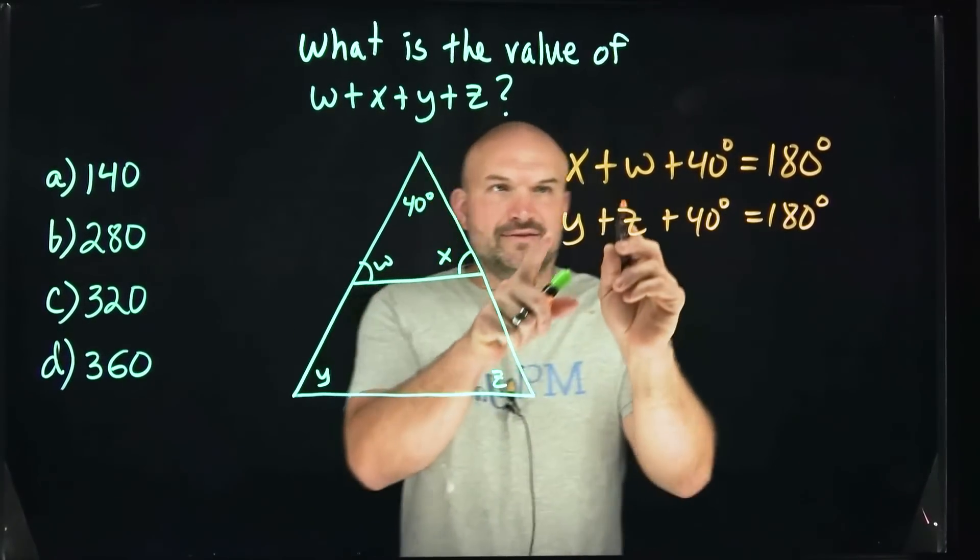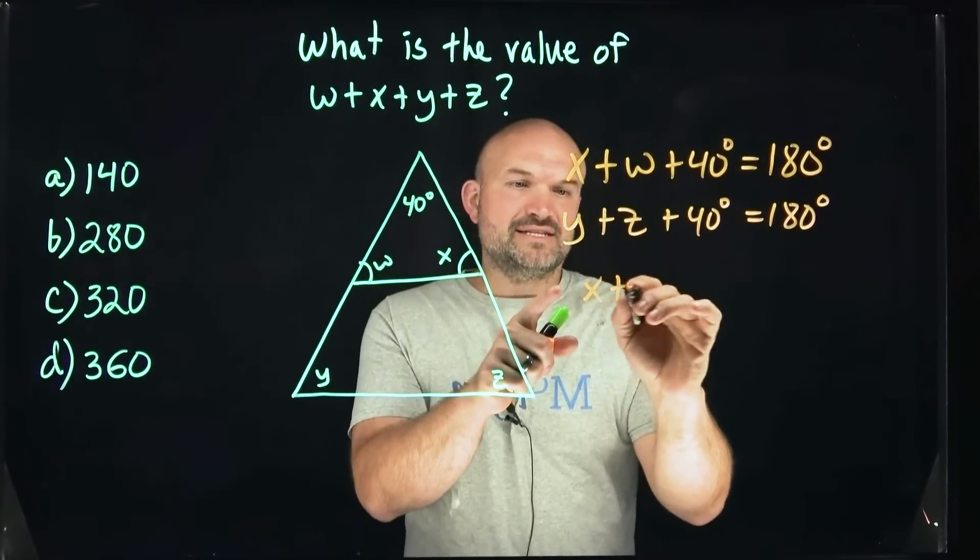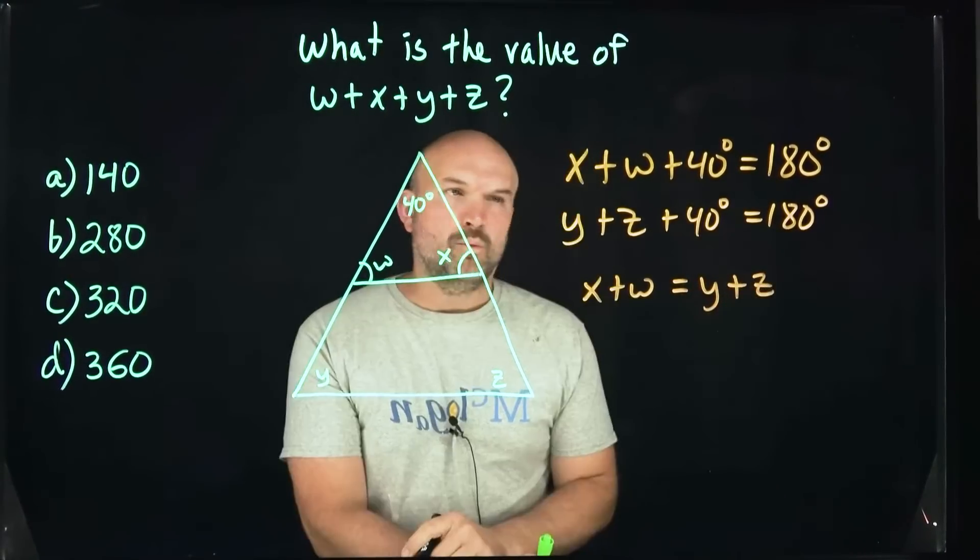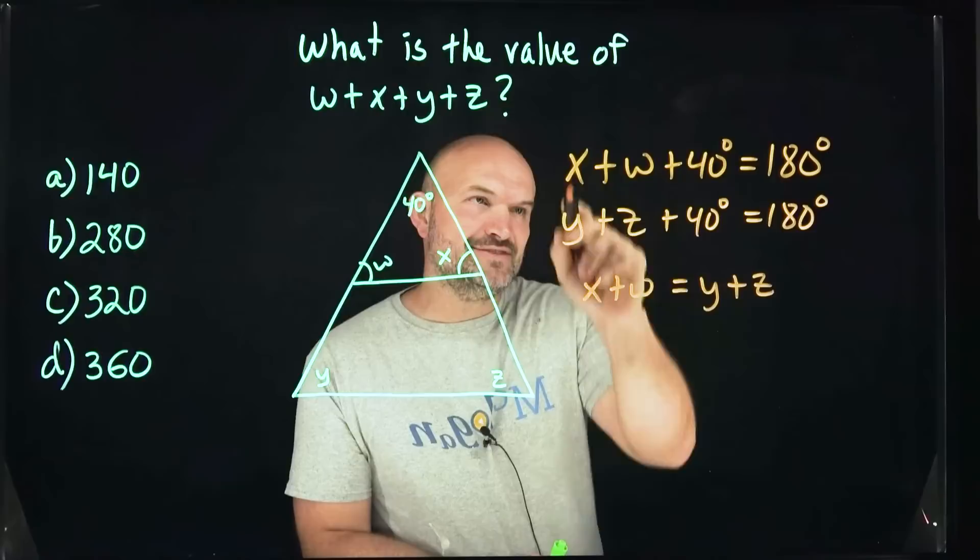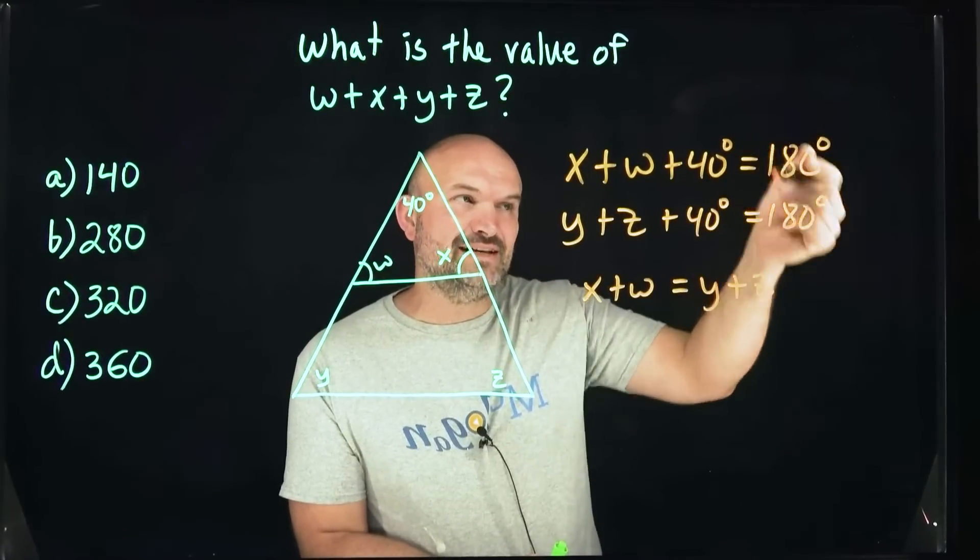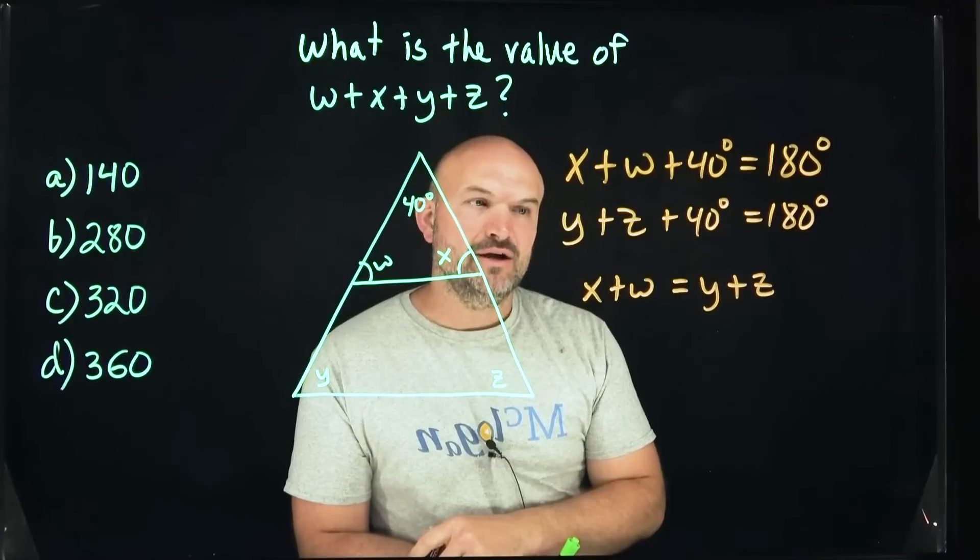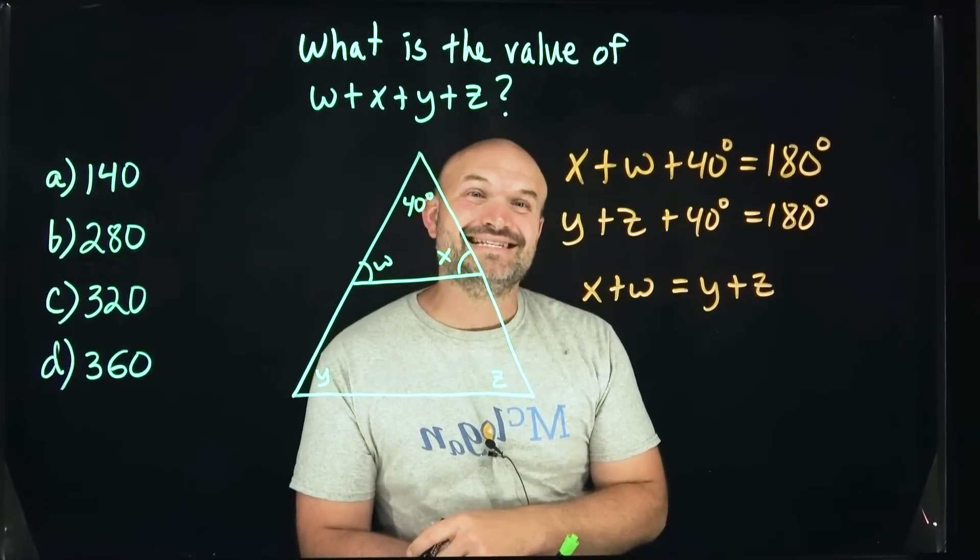So we could say that the sum of x plus w has to equal the sum of y plus z. Why do I know that? Well, again, because these values plus 40 have to equal 180 degrees. We actually don't need to know what these two sums are. We just need to know that they are going to be exactly the same.